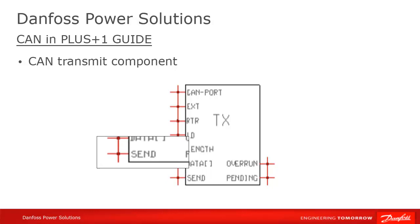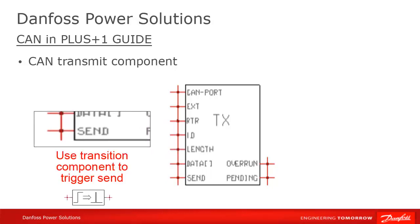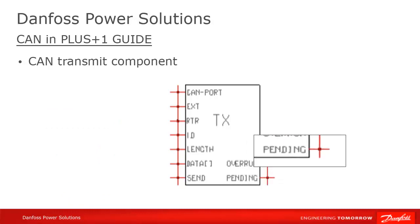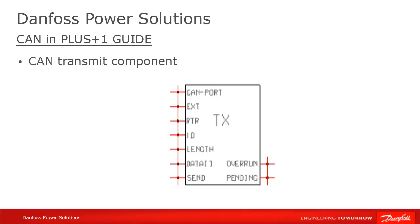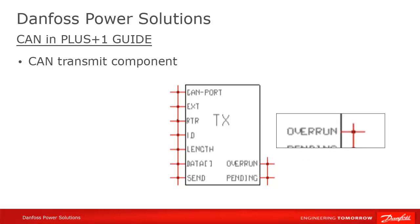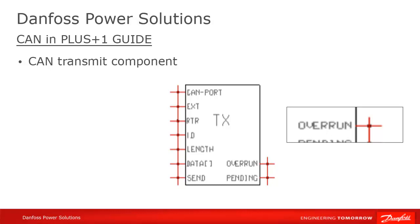When true, the send signal tells Guide to send the message at the end of the current execution loop. On the output side, the pending flag lets you know if a message sent in an earlier loop is still sitting in the output buffer — for instance, if it's been prevented from being sent due to CAN bus traffic. Overrun indicates that the output buffer is full and outgoing messages have been lost.